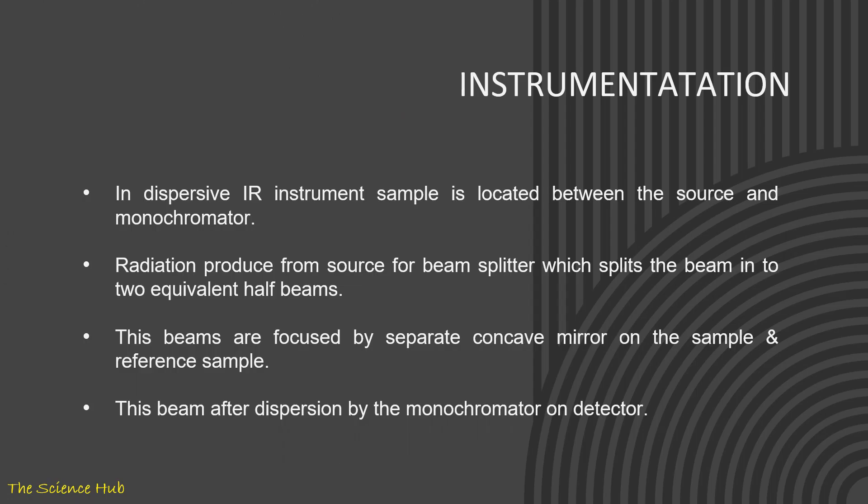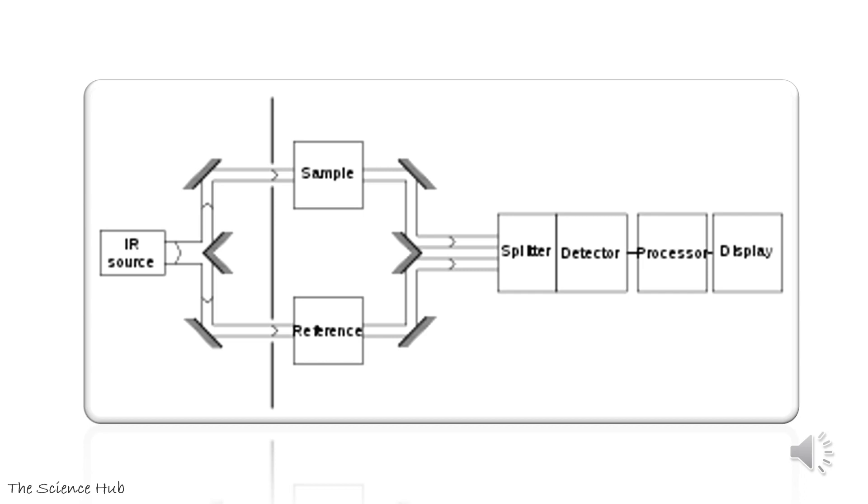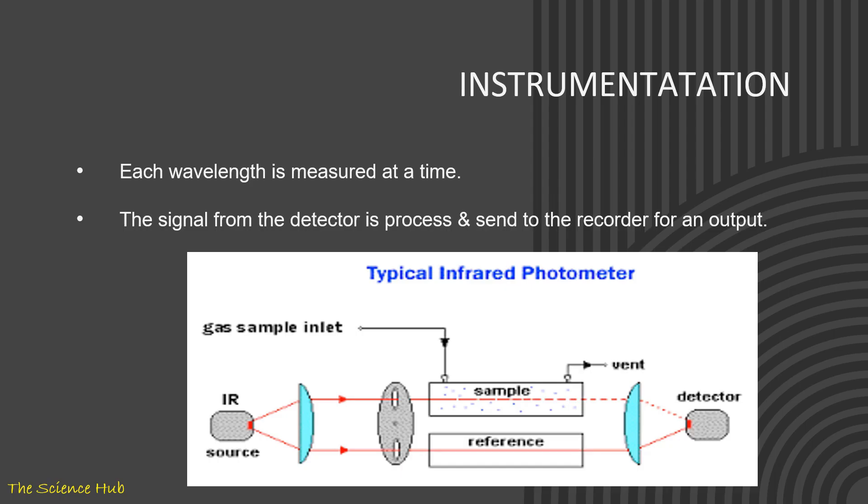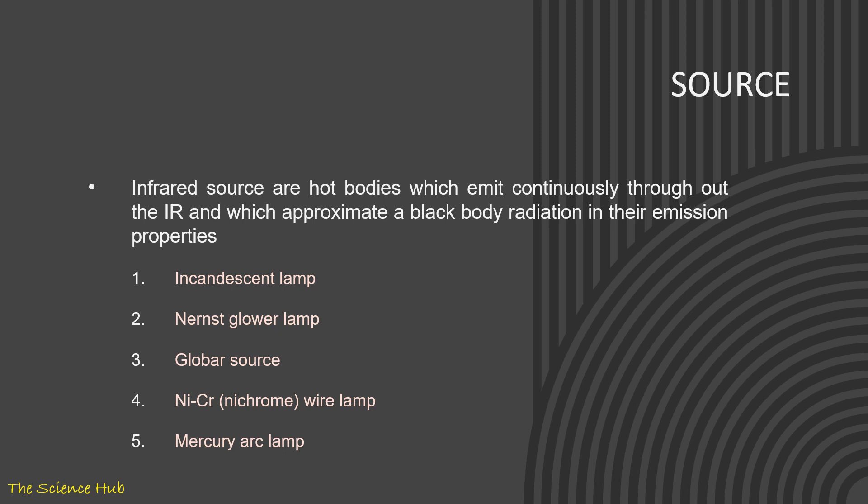Now we come to instrumentation. In dispersive IR instrument, the sample is located between the source and monochromator. Radiation produced from source for beam splitter splits the beam into two equivalent half beams. These beams are focused by separate concave mirrors on the sample and reference sample. This beam after dispersion by the monochromator falls on the detector. Here you can observe the block diagram of IR spectroscopy—double beam IR spectroscopy. Each wavelength is measured at a time. The signal from the detector is processed and sent to the recorder for output.